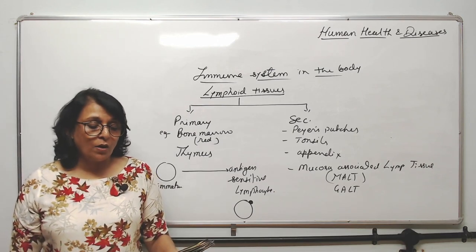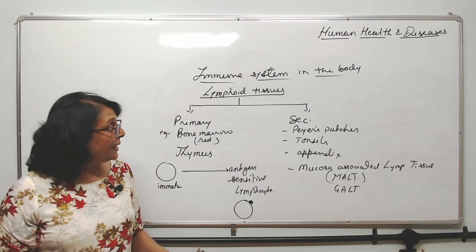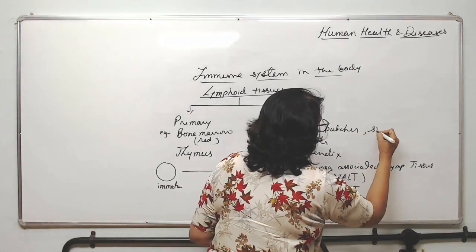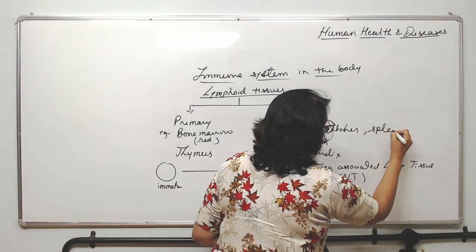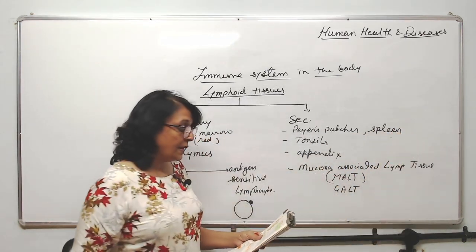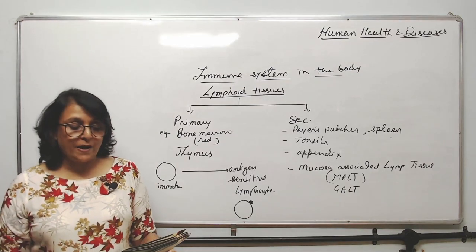Now what are the secondary lymphoid organs? Secondary lymphoid organs include spleen, lymph nodes, and tonsils.